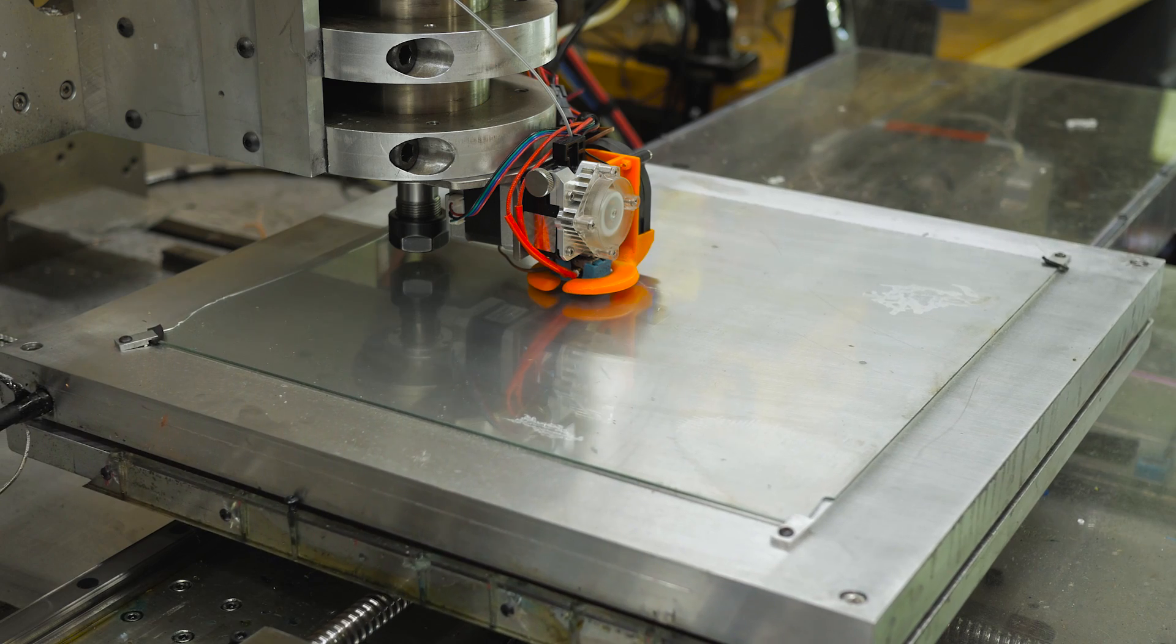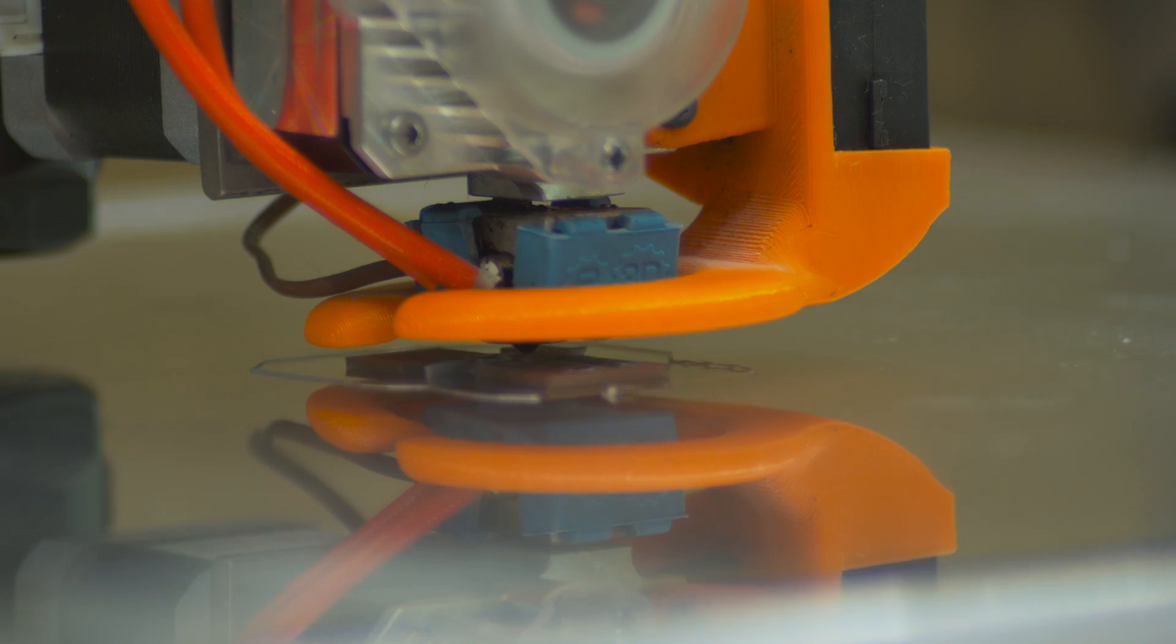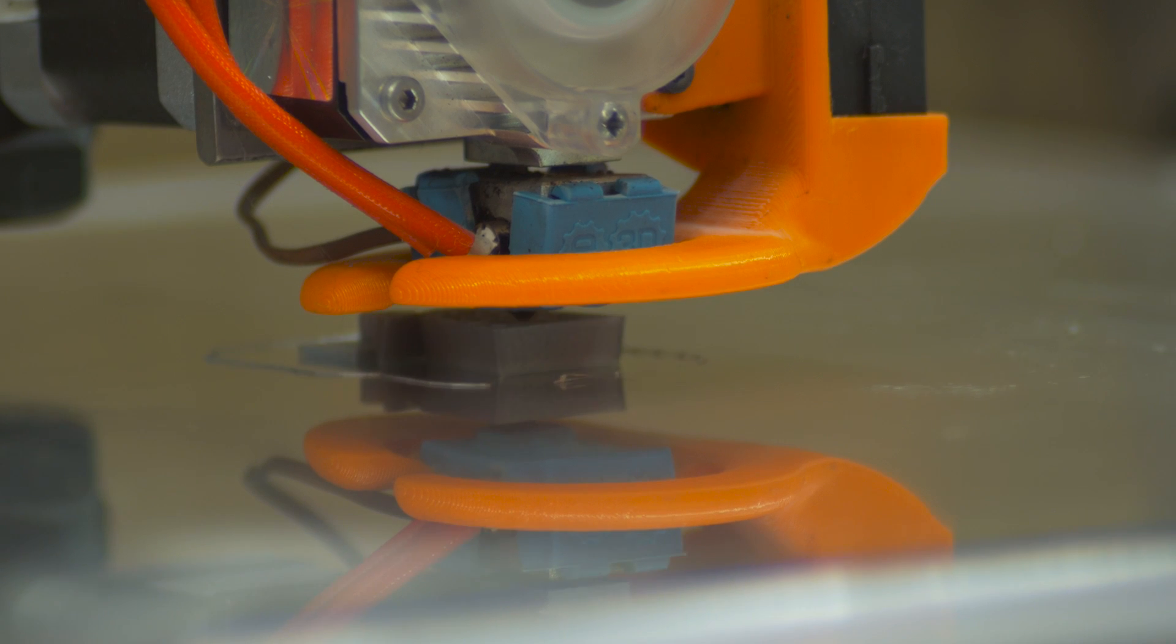First we have to start with a 3D printed part. I'm going for this model of the Maltese Falcon from Thingiverse. I will post the link in the description. I'm printing in gray PLA, but I think about any filament would work as well.